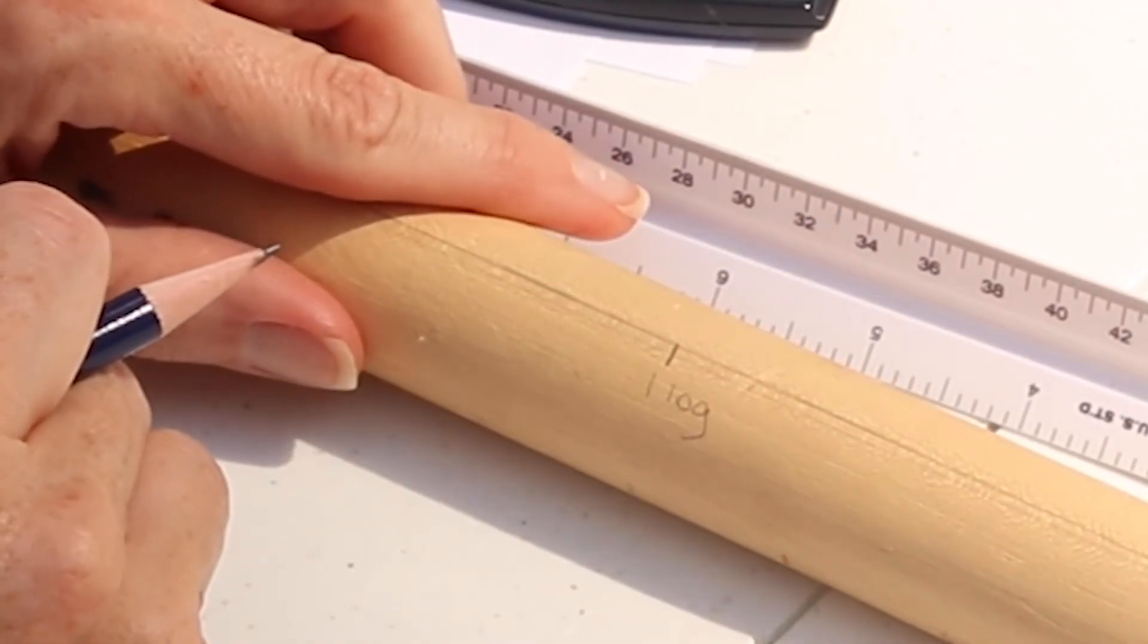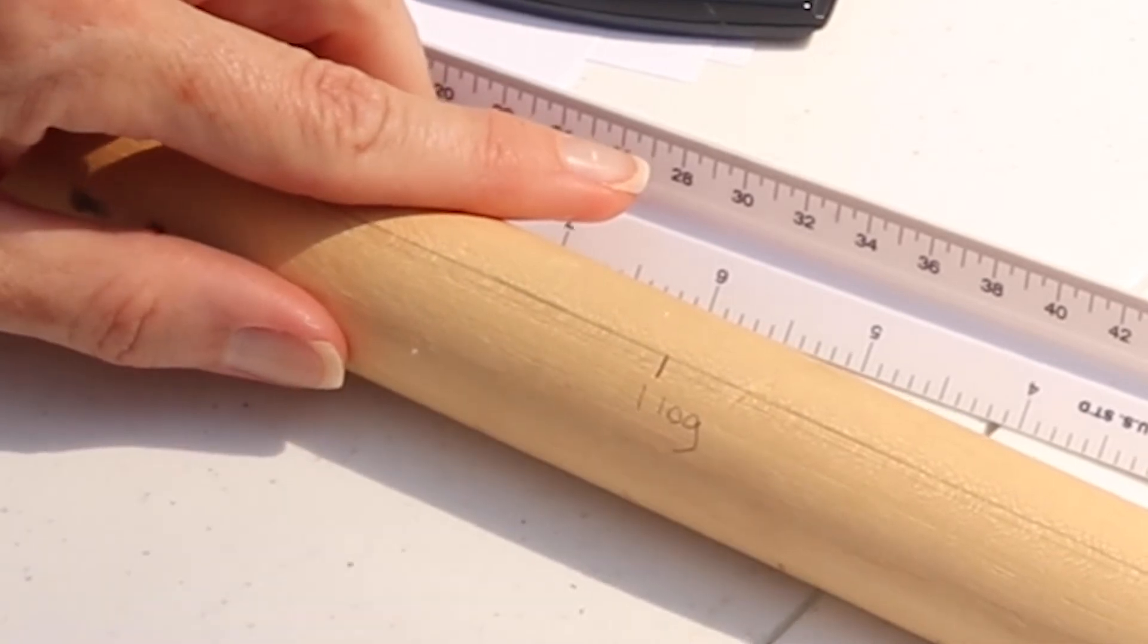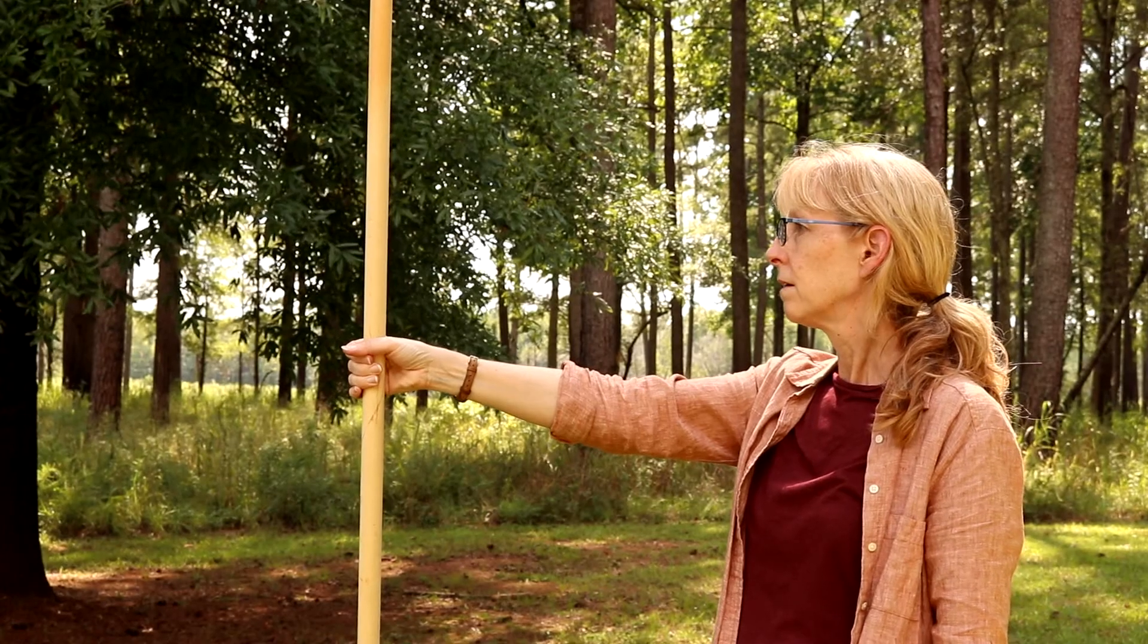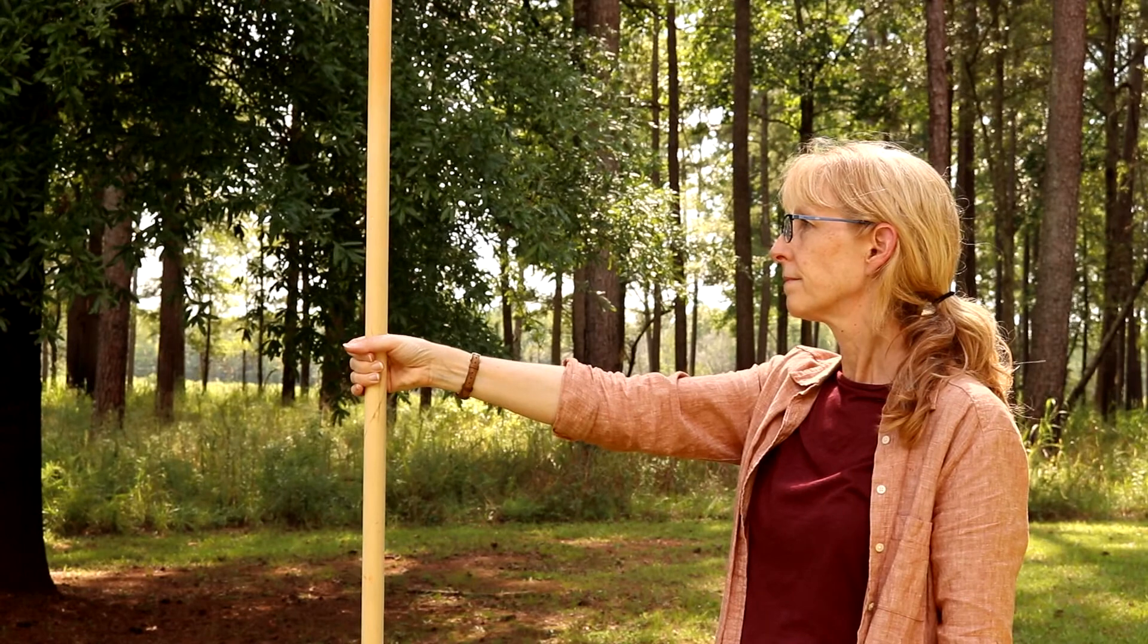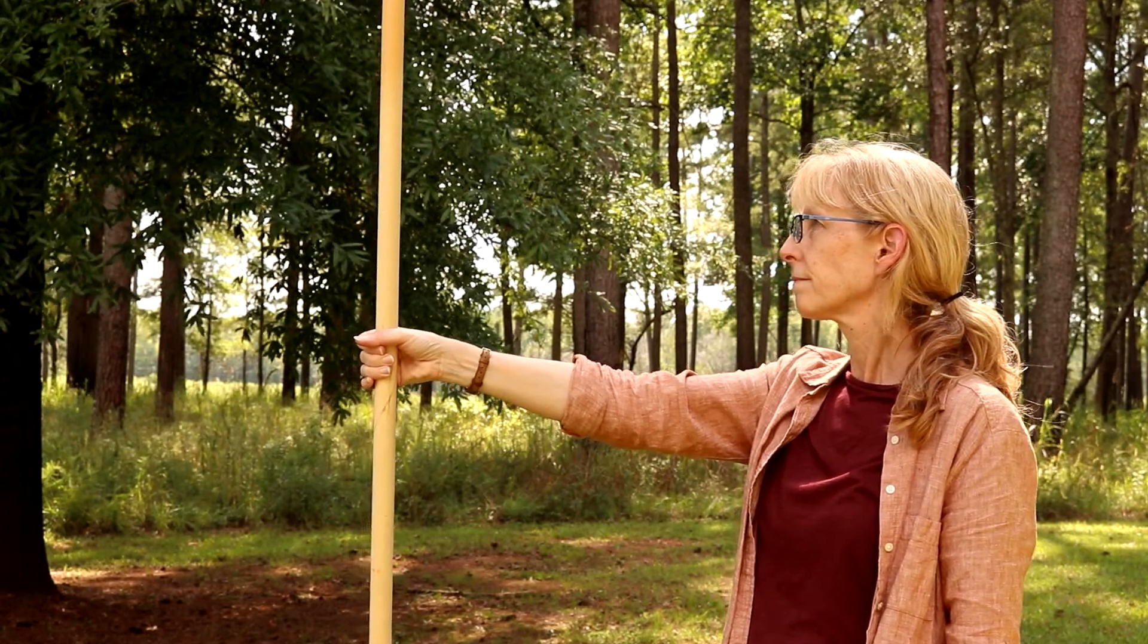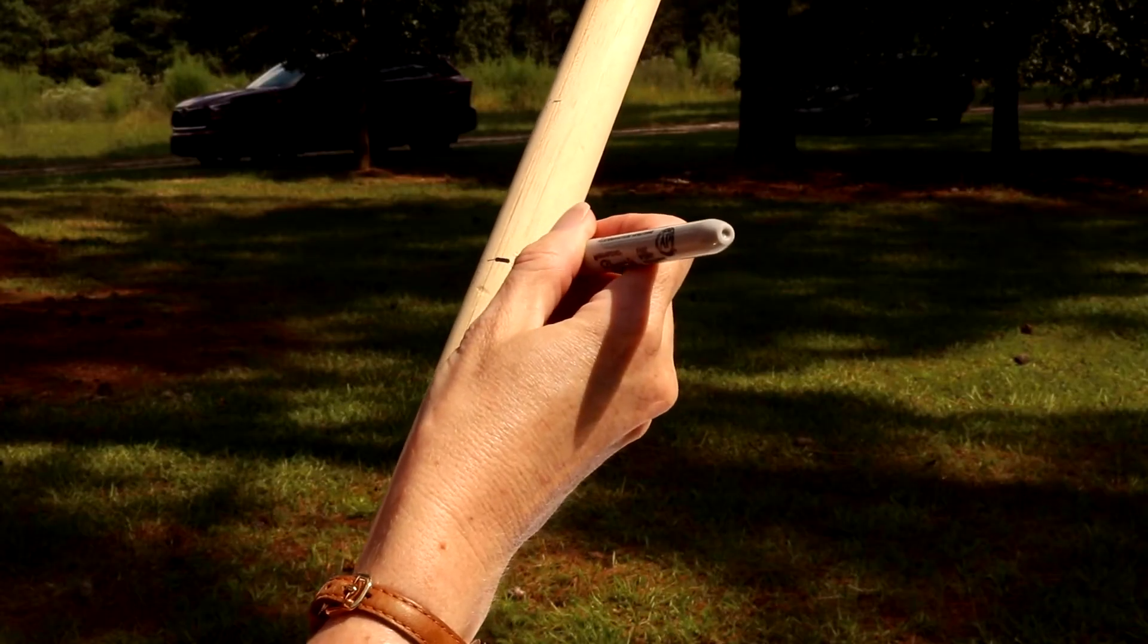You then repeat the process, labeling each mark as you go until all your height markings are complete. Once you have your graduations marked with pencil, check them for correctness using a manufactured hypsometer, clinometer, or an object of known height such as a utility pole.